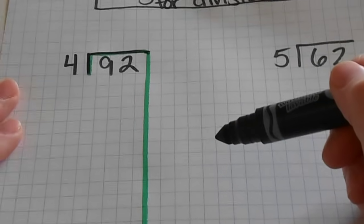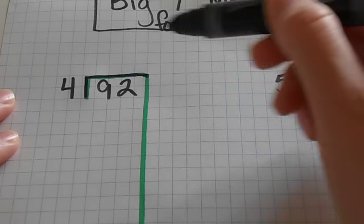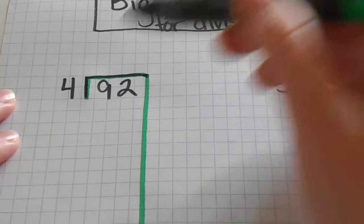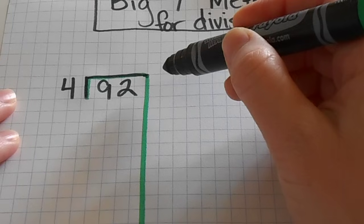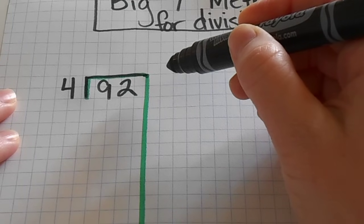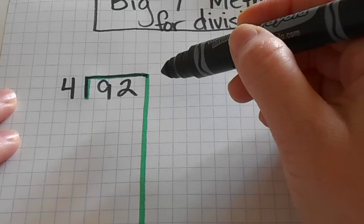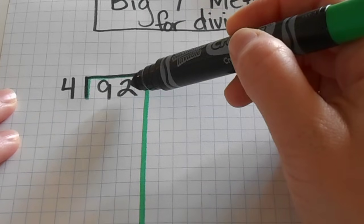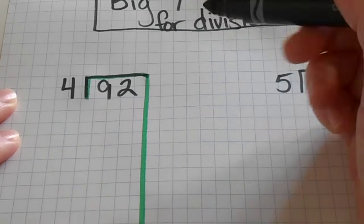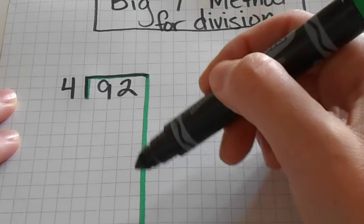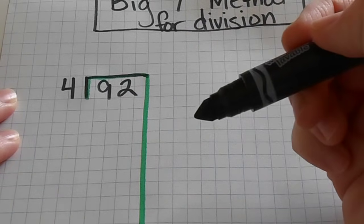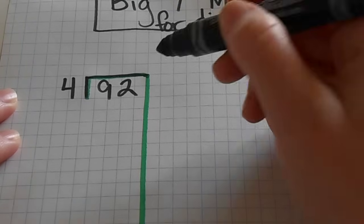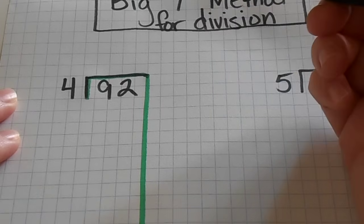So anyways, normally what we would do is we would say how many times can four go into nine and then how many times can four go into, you know, and do all of that. That can be a little bit confusing for some kids. So what we're really doing when we're dividing is seeing how many fours we can take out of 92. Now I could subtract four a bunch of times and then count up the number of fours that I subtracted and get my answer that way. But that can take some time to do.